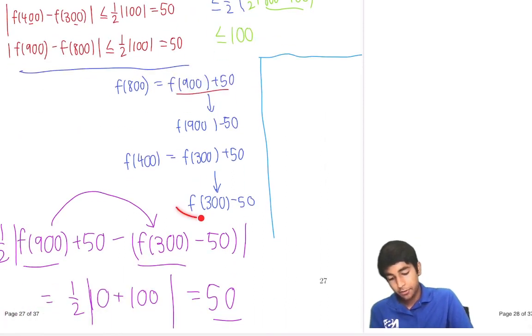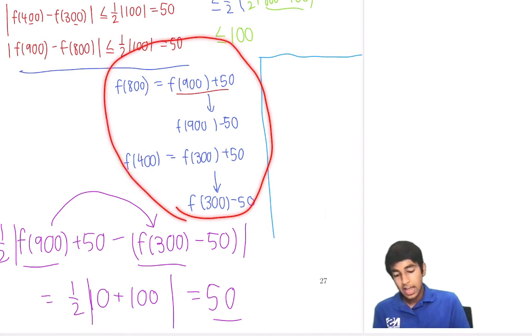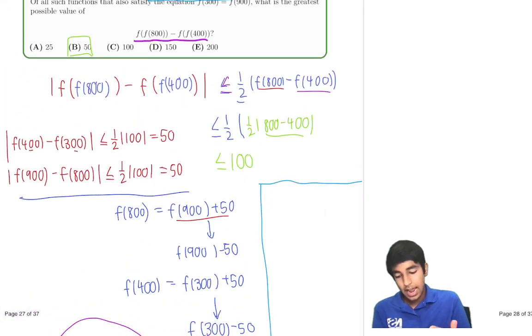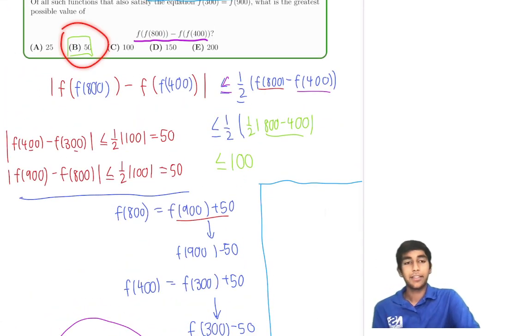So then we see that well that bound is not very strict, meaning that this number itself doesn't work, and we found that by substituting f(300) and f(400) and f(800) in terms of f(900) we got that it's less than or equal to 50, and that gives us our answer. Thanks for watching.